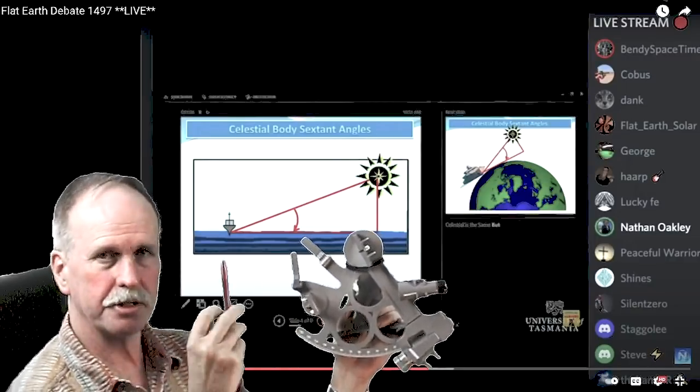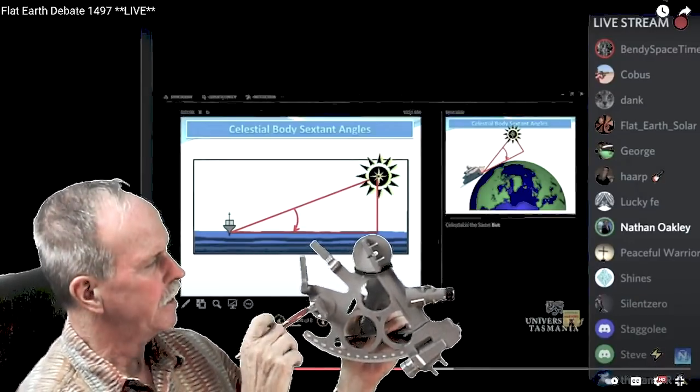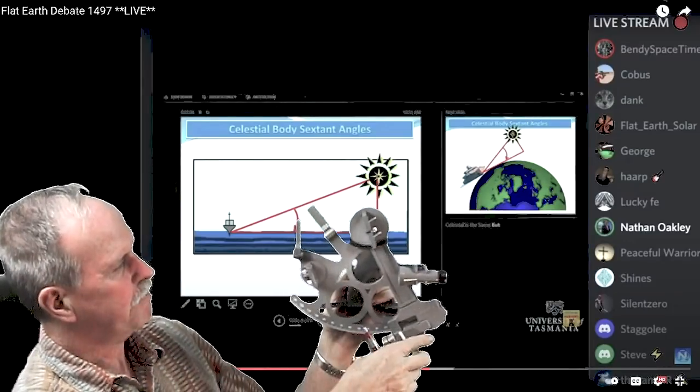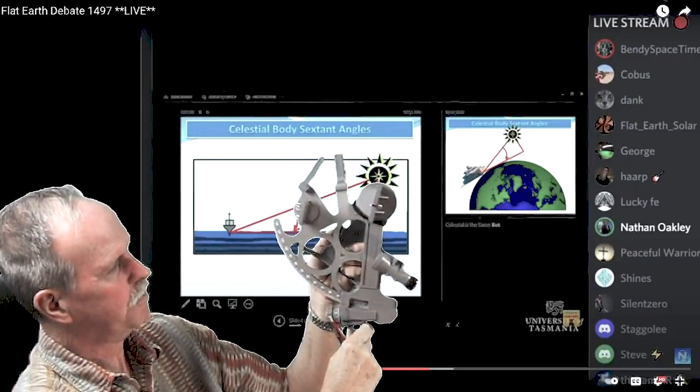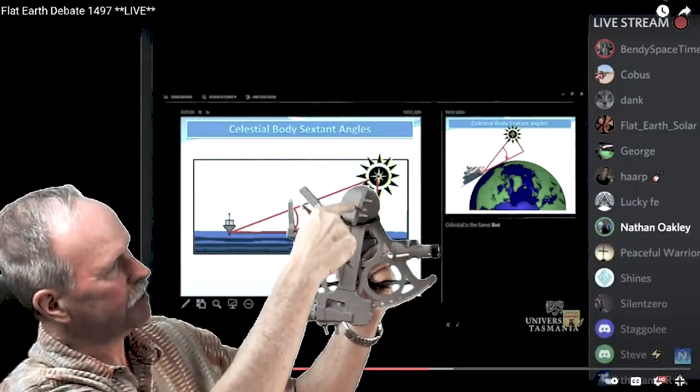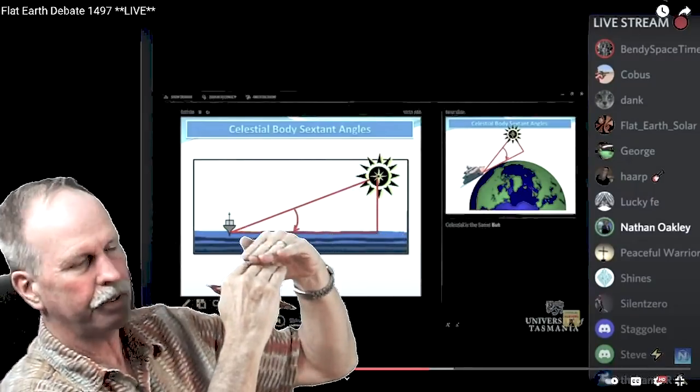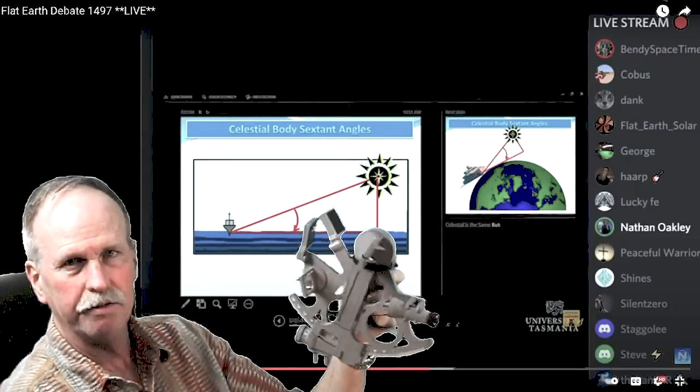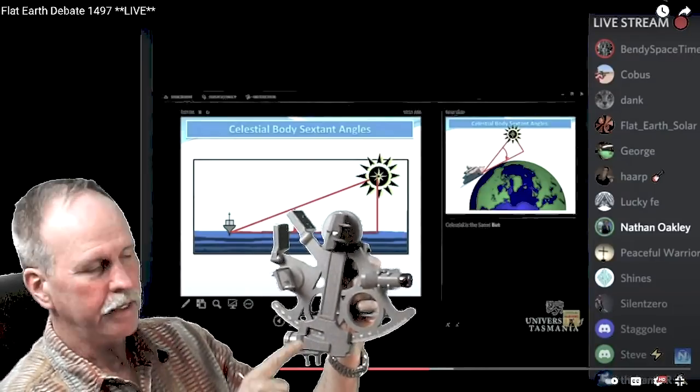Up here we have what's called the index mirror, and it is attached to the index arm. The way that you operate the sextant is you start off by looking up at a celestial object, perhaps the sun. So you're looking up. Then you pinch the index arm right here, and as you bring the sextant down to look at the horizon, you maintain this mirror so that the sun is reflected through this index mirror onto the horizon mirror and back to the telescope. What will happen is you'll bring the sun down to the horizon until the very lower limb of the sun, the bottom edge of the sun, is just touching the horizon. And then what you do is you rock it back and forth a little bit to make sure that you are at the bottom of the swing so that the sun is literally just touching the horizon. And then you read off your angle.